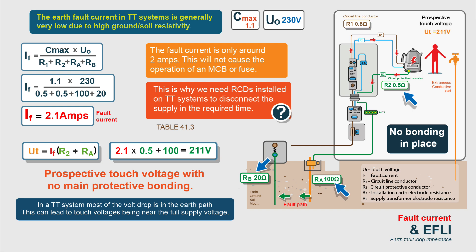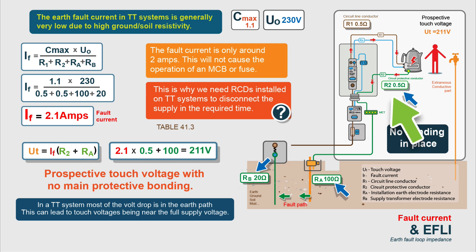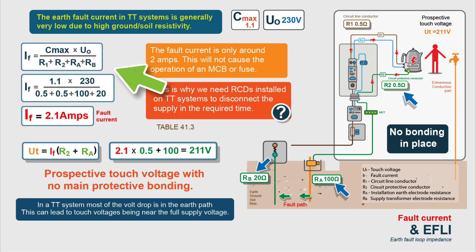This calculation process is explained in another video — I'll put a link to that — but we'll quickly go through it. What we're trying to find out is the touch voltage. The formula for touch voltage is the fault current times R2 and RA. This is the formula for a TT system. Our R2 is the CPC from the fault — in this case it's the kettle — so it's the CPC resistance from the kettle to the main earthing terminal. RA is the resistance of our earth electrode back to the transformer. We get our fault current by multiplying our voltage by Cmax, then dividing by R1 plus R2 plus RA plus RB.